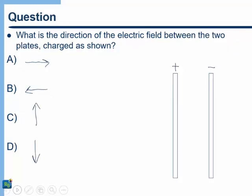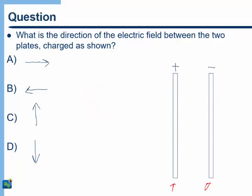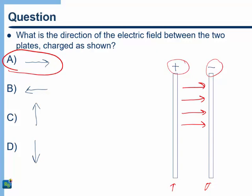What's the direction of the electric field between two parallel plates charged as shown? The parallel lines represent parallel plates — picture two pieces of paper held parallel to each other. The answer is to the right, because a positive test charge placed there would be repelled by the positive plate and attracted to the negative plate. This is how parallel plates create uniform electric fields.